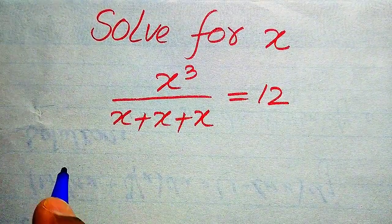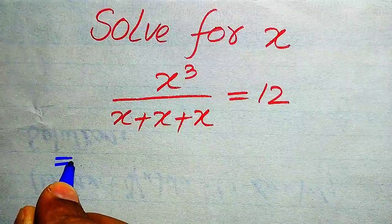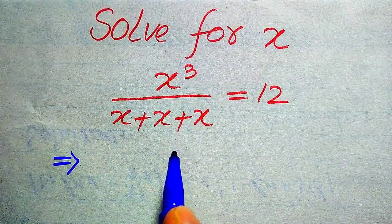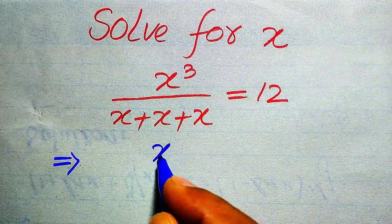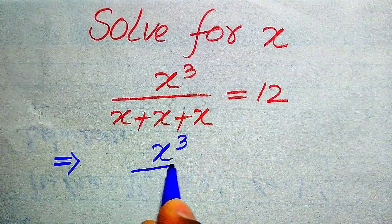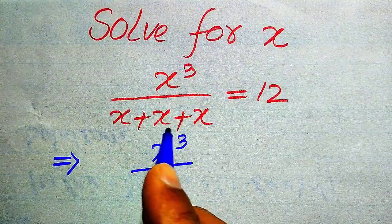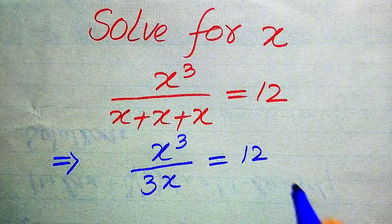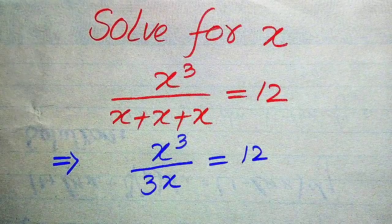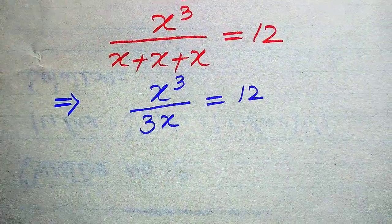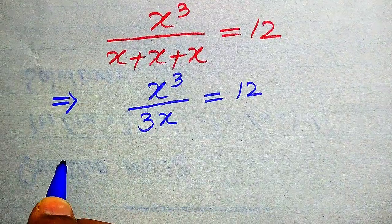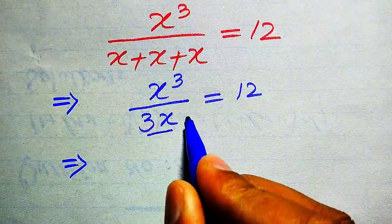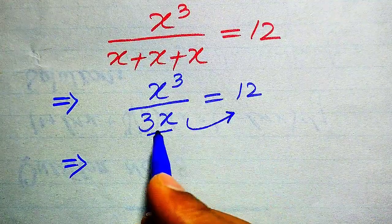Moving toward the solution, the first thing we do is notice that x appears three times on the left-hand side. We add the coefficients: 1 plus 1 plus 1 gives 3 times x. So the equation becomes 3x equals 12.